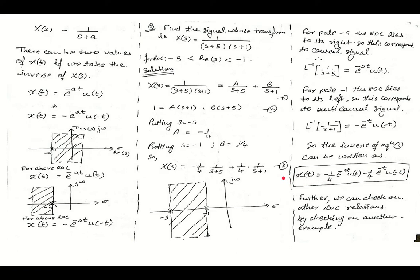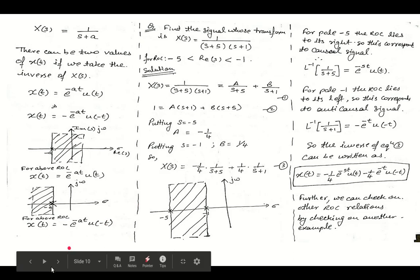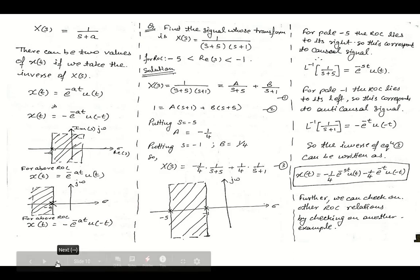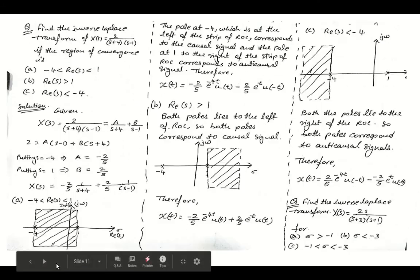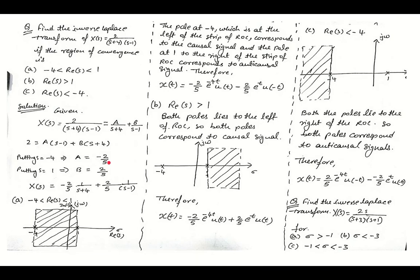To further clarify the role of ROC in inverse Laplace calculation, we solve another numerical with all three cases given. Find the inverse Laplace transform of X(s) = 2/((s+4)(s-1)), where: (a) -4 < Re(s) < 1, (b) Re(s) > 1, and (c) Re(s) < -4.